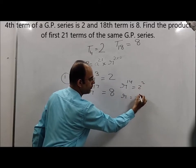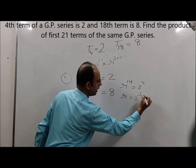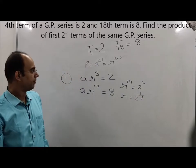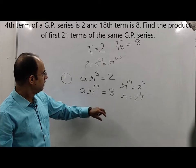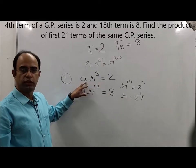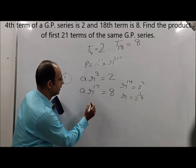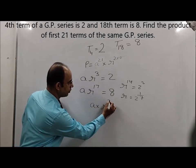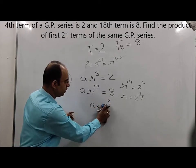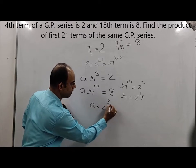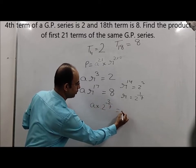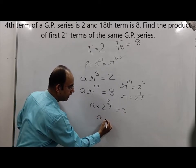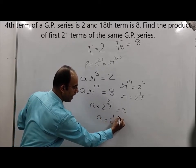From r¹⁴ = 4, we can write this as 2², so r = 2^(2/14) = 2^(1/7). Now putting the value of r into a·r³ = 2, we get a · 2^(3/7) = 2, therefore a = 2^(1 - 3/7) = 2^(4/7).